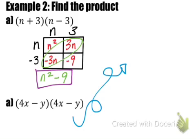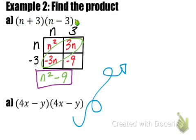We call this the difference of two squares because we have the difference — a minus sign — of two squares: n squared and 9, which is a perfect square. That's why we call this specific product a difference of two squares, because we end up getting a difference of two squares.